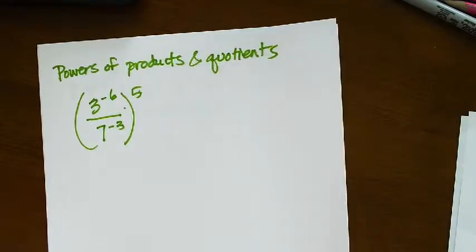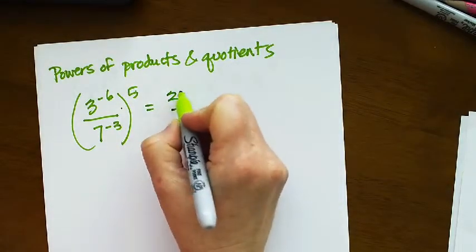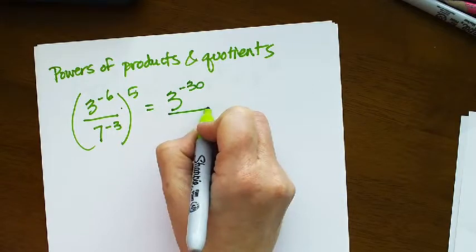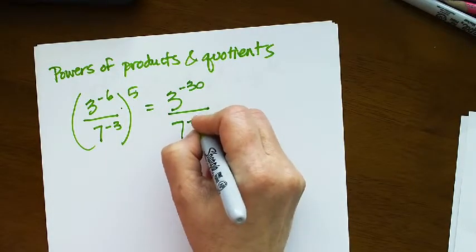So here I've got 3 to the negative 6 being raised to the 5th power. That's going to be 3 to the negative 30th power over 7 to the negative 3 raised to the 5th would be 7 to the negative 15.